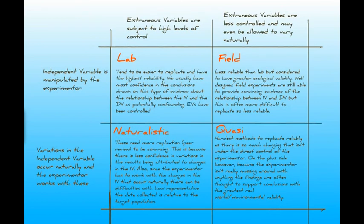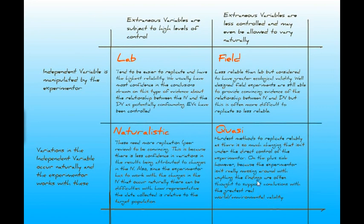Finally, quasi experiments are where we wait for natural variations in the IV and also don't exercise much control over extraneous variables. In some ways this is the least scientific design, but probably also the most real-world true. It's the hardest to replicate reliably with so many changing variables underneath it. On the plus side, because the experimenter isn't really interfering with anything, the findings are often thought to support conclusions with the greatest ecological validity.